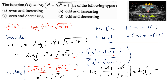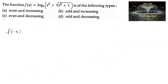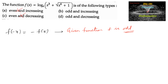This equals negative log of (x³ + √(x⁶ + 1)), which means f(-x) = -f(x). Therefore, the given function f is an odd function. Options A and C are ruled out. Now we need to check whether this function is increasing or decreasing.